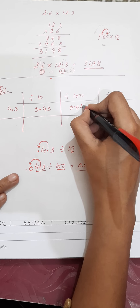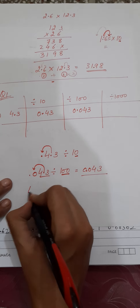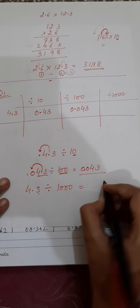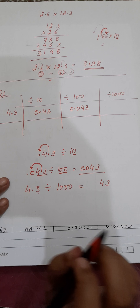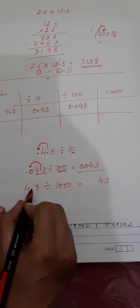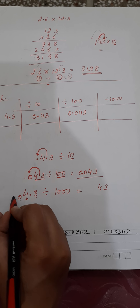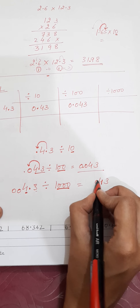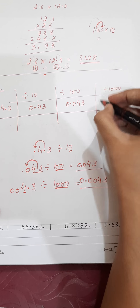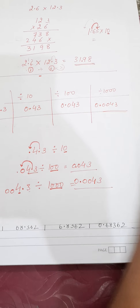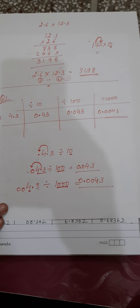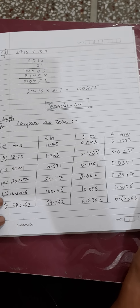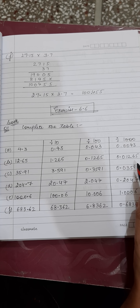Now 4.3 divided by 1000: write 43 as it is. There are three zeros, so the decimal moves back three places — one, two, three — giving 0.0043. That's how you solve question 1a. I have explained part a; now I'll explain part b, and the rest of the parts you will do by yourself.